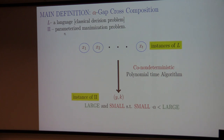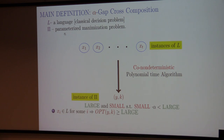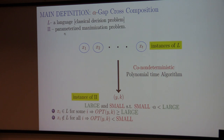Along with this instance, the algorithm outputs two numbers: one large and one small, such that small × alpha < large. The property we want is: if at least one of the input instances is a yes instance, then OPT(y, k) ≥ large. And if all the instances are no instances, then OPT should be less than small.